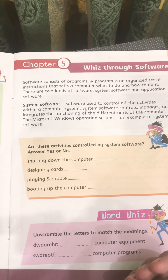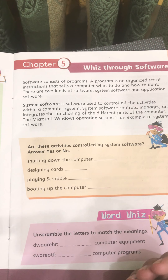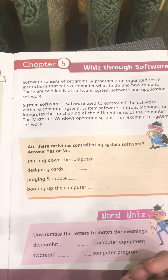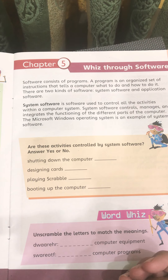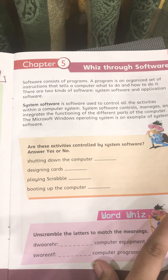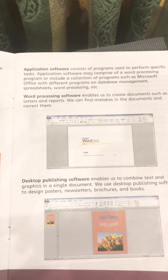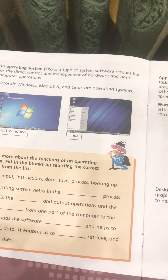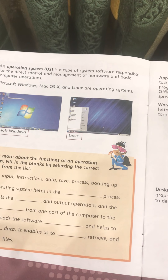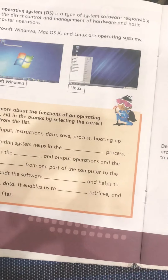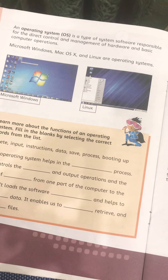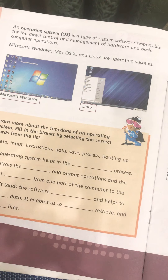System software is the main basic software necessary for the computer. It is related to the functioning of different parts of the computer. Windows operating system is an example of system software. We also discussed that the operating system is a type of system software responsible for direct control and management of hardware and other basic devices. Microsoft Windows, Mac, and Linux are different operating systems.